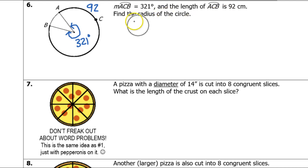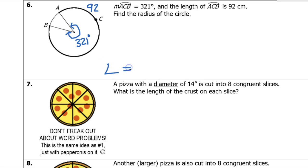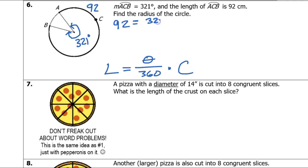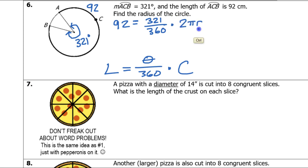We're looking for the radius, so this is going to be really the same thing as before. We know that the arc length is always some fraction of the circumference. The arc length is a fraction of the circumference. So we know the arc length is 92, so I'm going to put 92 in for L. So I've got 92 equals — we know that theta is 321, so the fraction is 321 over 360. That's the fraction of the circumference. We know that the circumference is 2πr, so I'm going to go ahead and just put 2πr for the circumference.